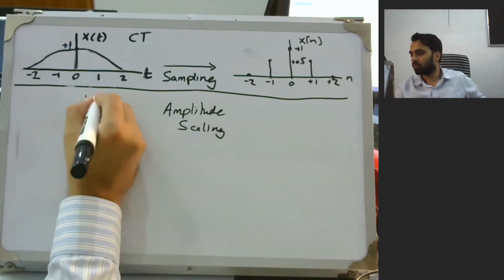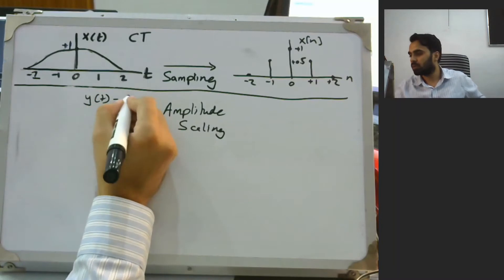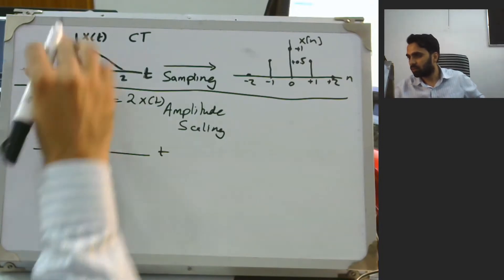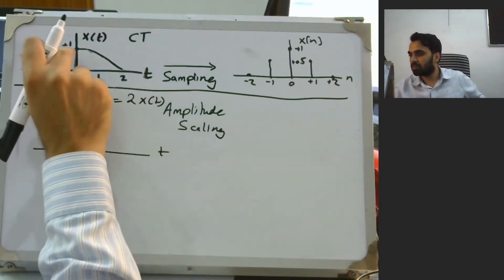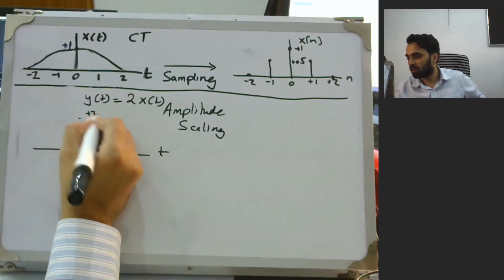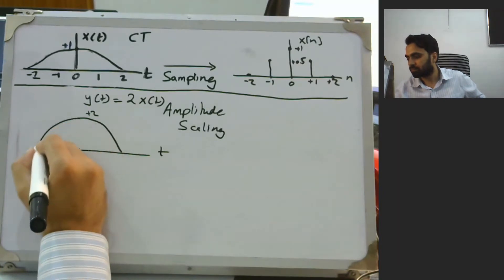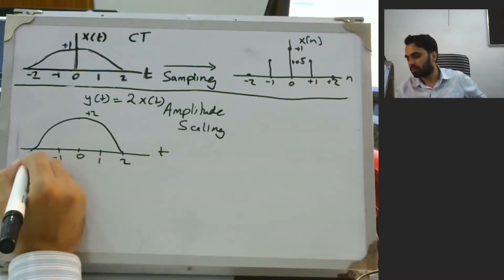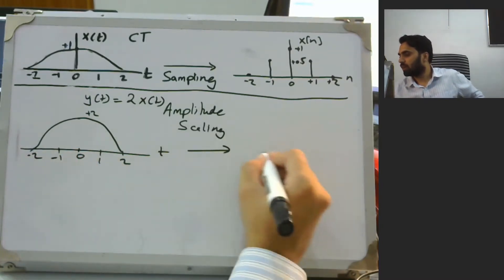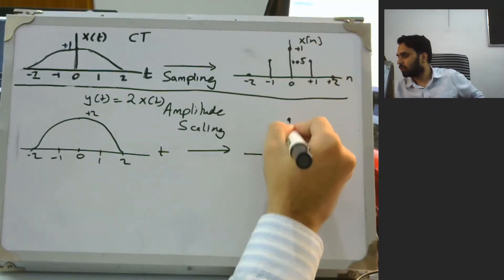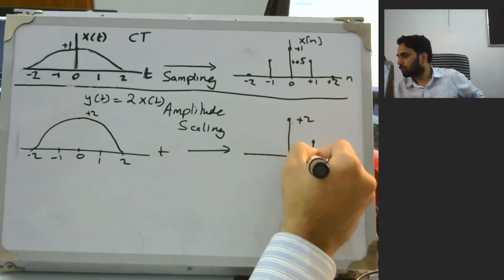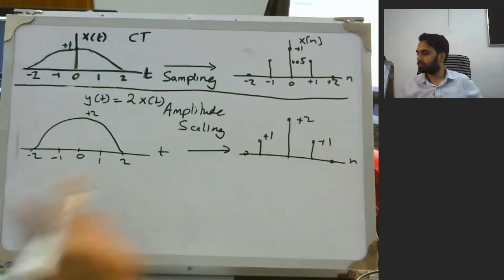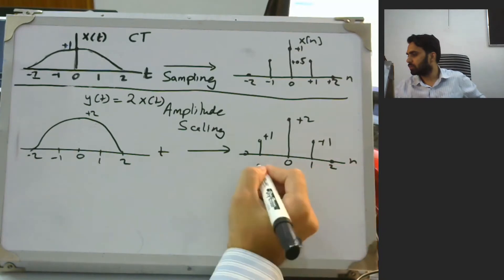Amplitude scaling is a very simple operation. If we have y(t) that is just a scaled version of the input, that is 2x(t), the whole signal would be scaled up. If the value at 0 was plus 1, we would have a value of plus 2. The time instance remains the same but the amplitude is scaled. The same thing happens to the discrete-time signal — what was plus 1 is now plus 2.